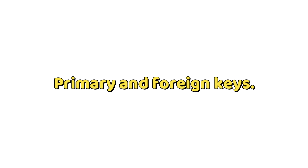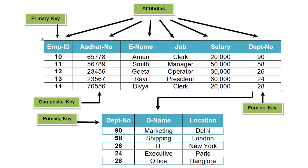Primary and foreign keys. Every book in our library has a unique identification number — that's exactly what primary keys do for our records. They ensure that each record in a table can be uniquely identified. But what if we want to link two bookshelves, like fiction and their authors? We use foreign keys. These are special fields that maintain relationships between tables, making sure our data is consistent and interconnected.